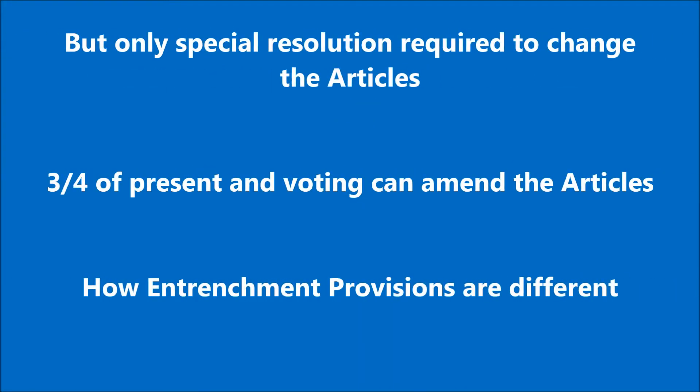But as we discussed earlier, articles can be changed with a special resolution passed by the members. Special resolution means a resolution passed with a three-fourth majority. In other words, in any general meeting where an amendment in articles is proposed, a majority of three-fourths of members present can pass the special resolution to amend the articles. Then how are entrenchment provisions different?